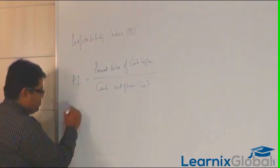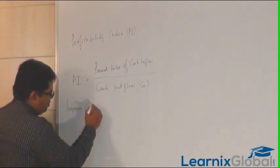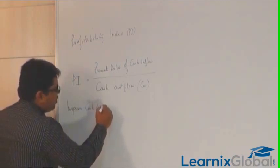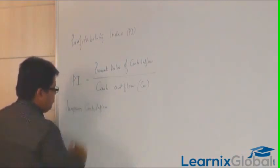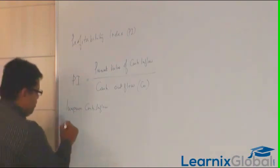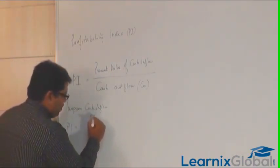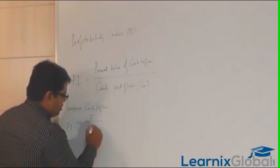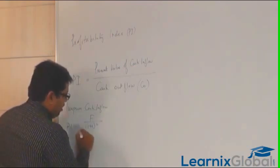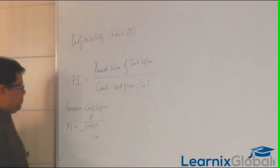For example, if the cash inflow is a lump sum, you have to use the present value of a lump sum formula. That makes: profitability index equals F divided by (1 + i) to the power n, the whole divided by cash outflow.